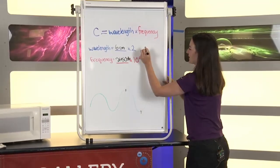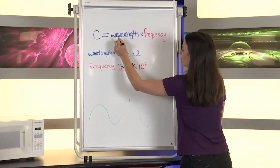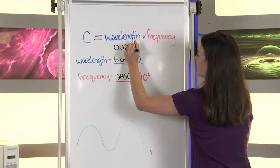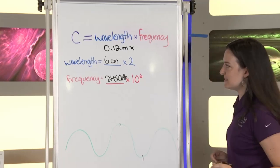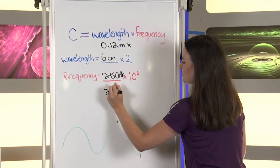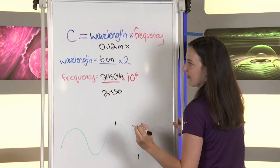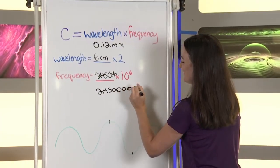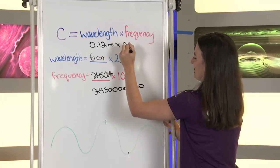So, that's between here and here. So, we're going to multiply it by two to get a full wavelength. So, 12 centimeters. And actually, we're going to go to meters real quick. So, we're going to do 0.12 meters times 2450. You ready? Six more zeros. One, two, three, four, five, six.